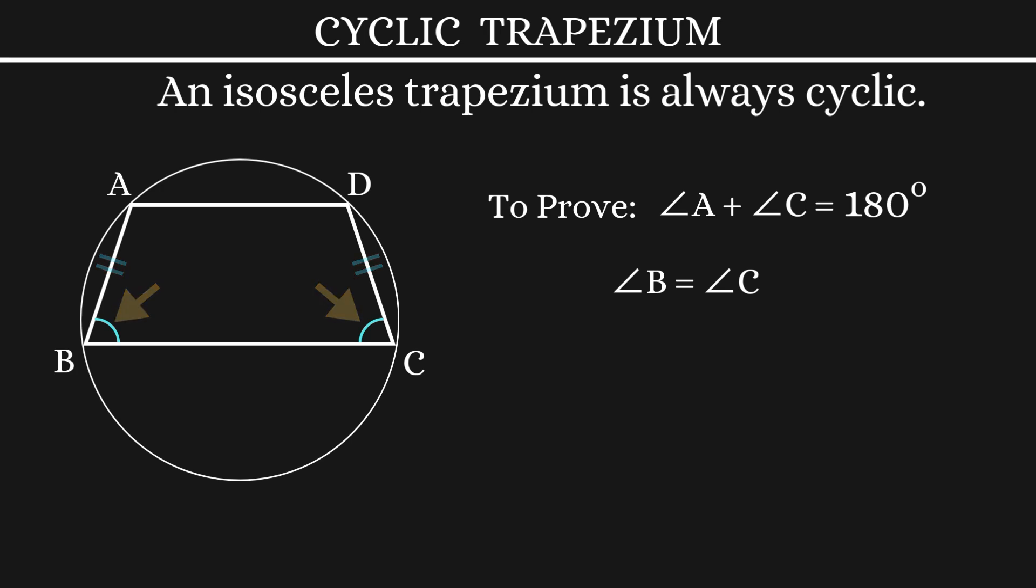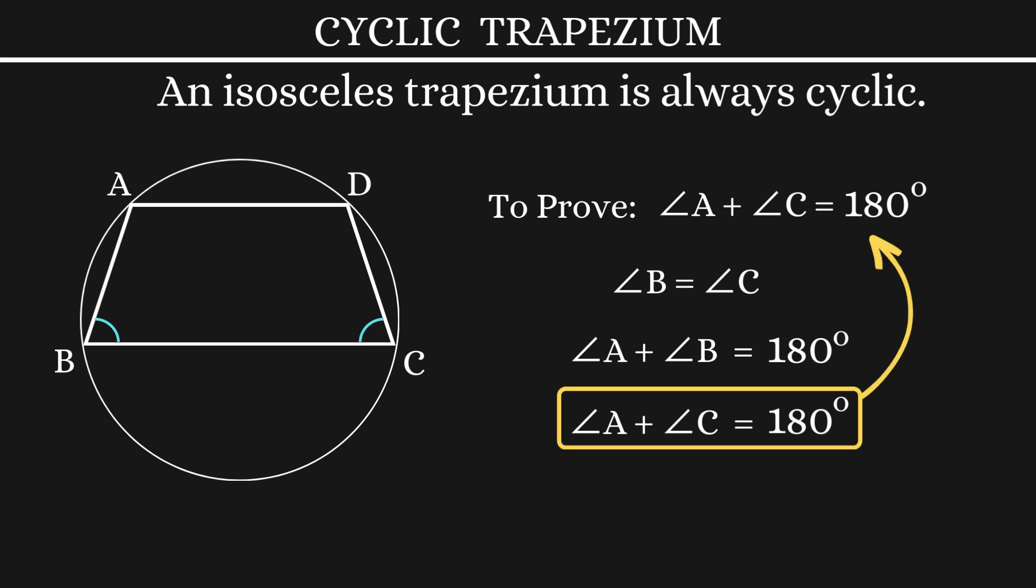Next, we know that AD and BC are parallel lines. So, angle A and angle B become the co-interior angles, which are supplementary. So, angle A plus angle B is 180 degrees. Now, using this equation here, we can say that angle A plus angle C is 180 degrees. And that means the isosceles trapezium is always cyclic.